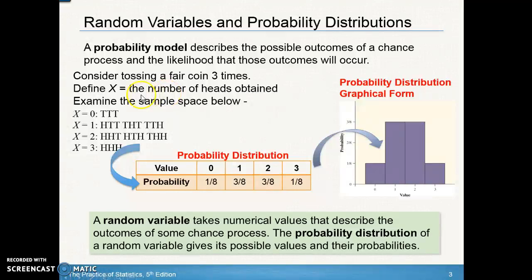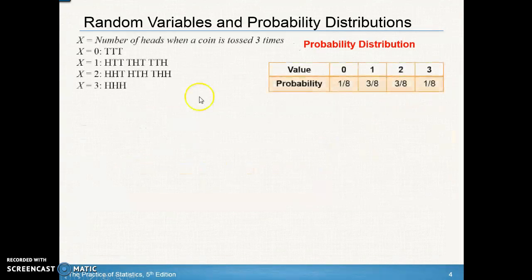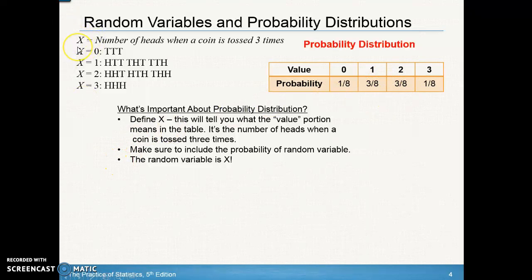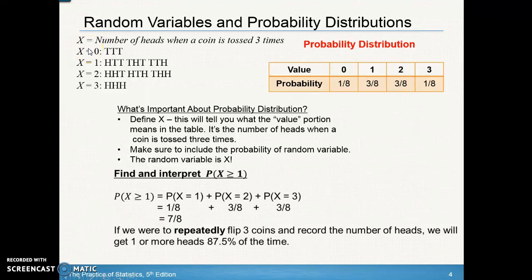When we define a random variable, we're assigning numbers to a chance process. There are key things to include in a probability distribution: first, define X — for example, X equals the number of heads obtained when you toss a coin three times. Include the probability of each value, and state that the random variable is X. If you don't define X and then someone asks you to find the probability that X is greater than or equal to one, you won't know what that means.